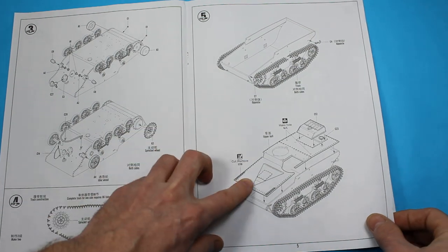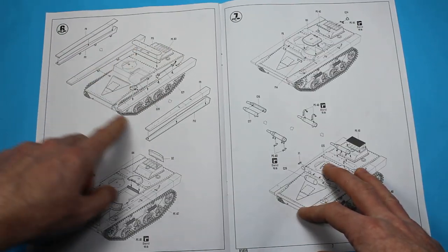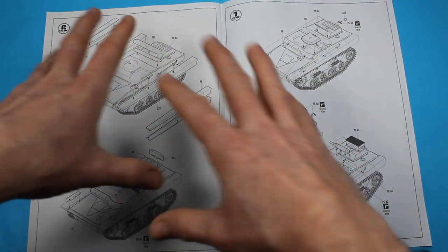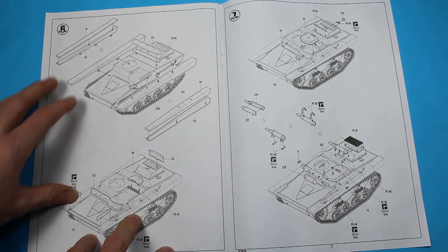Then we're down into the tracks, which are individual link tracks. A few small bits being added, then the upper hull goes on with fenders, tools, and all the parts that plug gaps and doors.